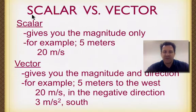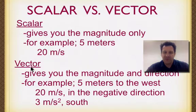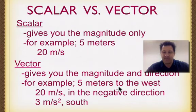Let me just go over that quickly again. We have scalars and vectors. A scalar gives you the magnitude only — for example, 5 meters. A vector includes a direction — for example, 5 meters to the west. That's really the main difference between a scalar and a vector.